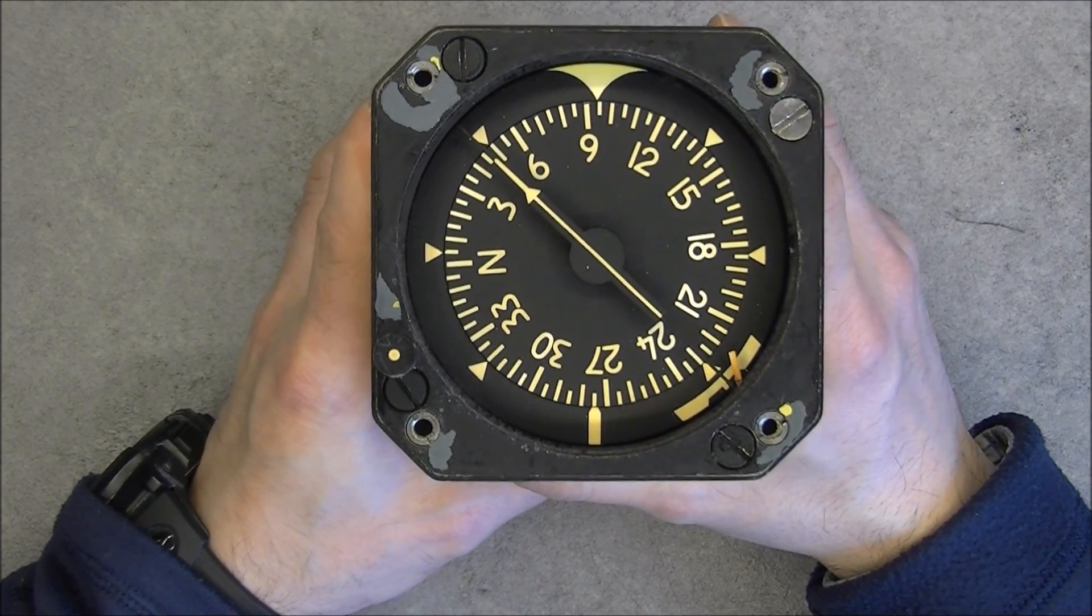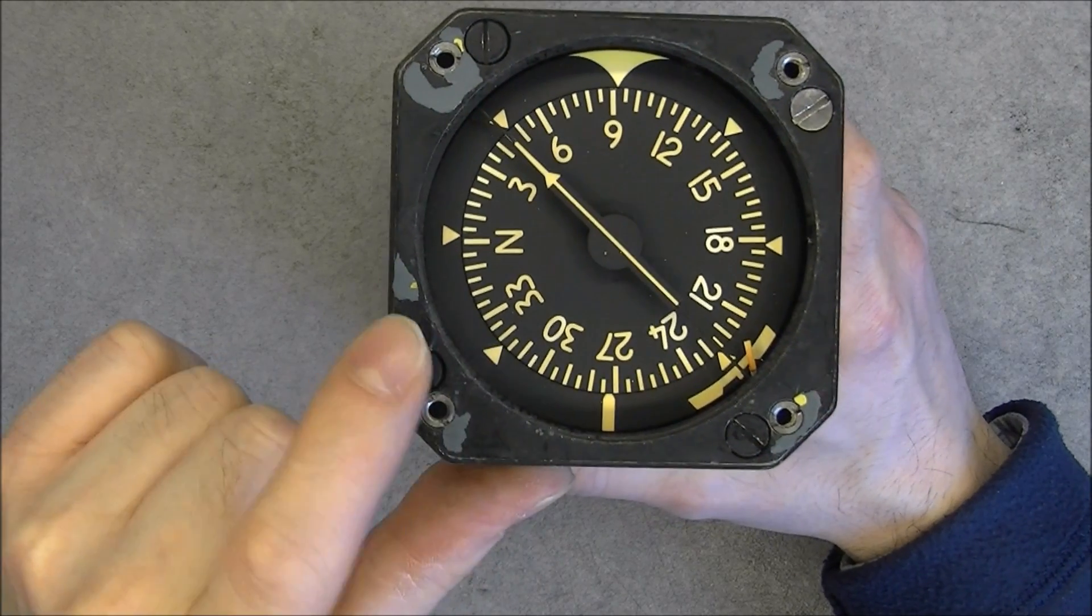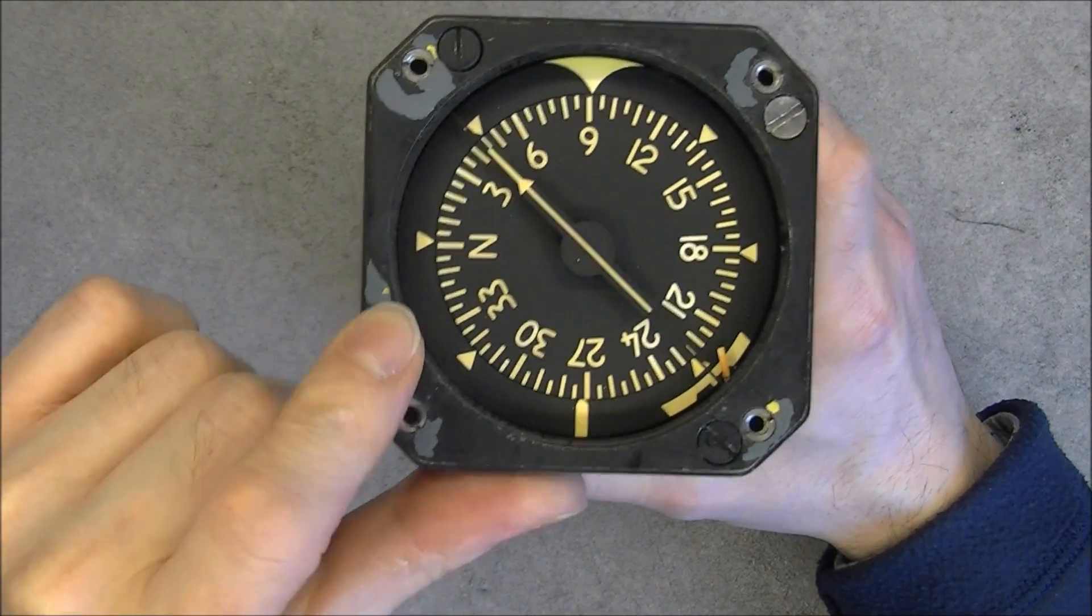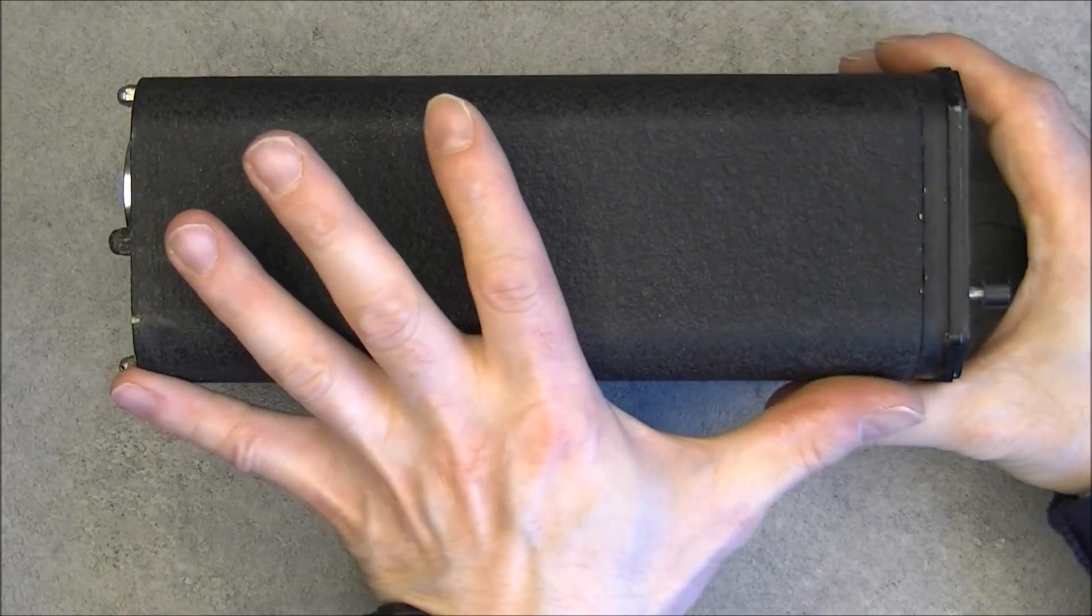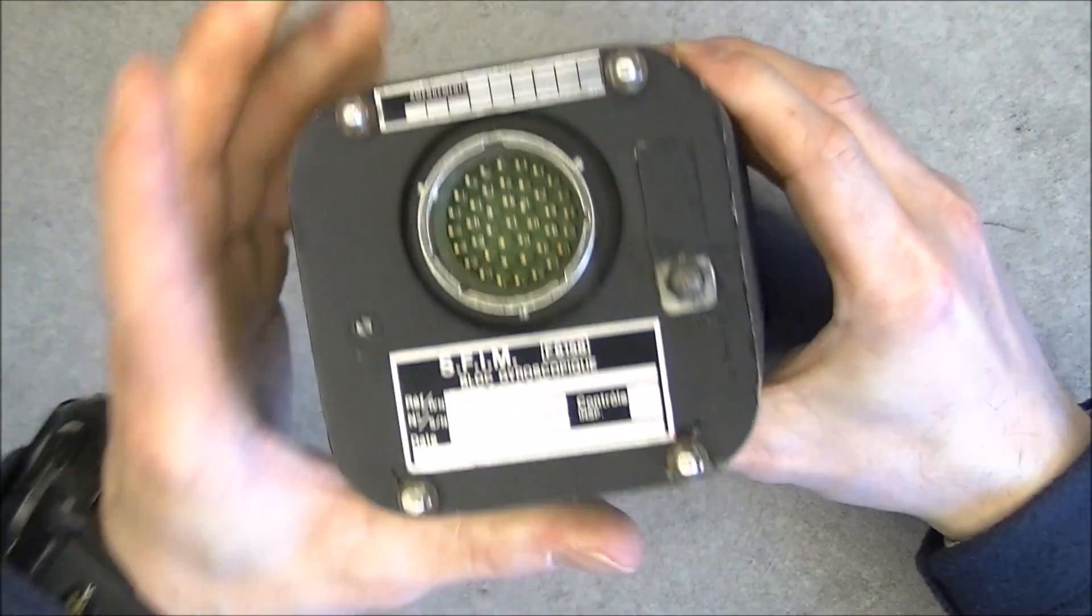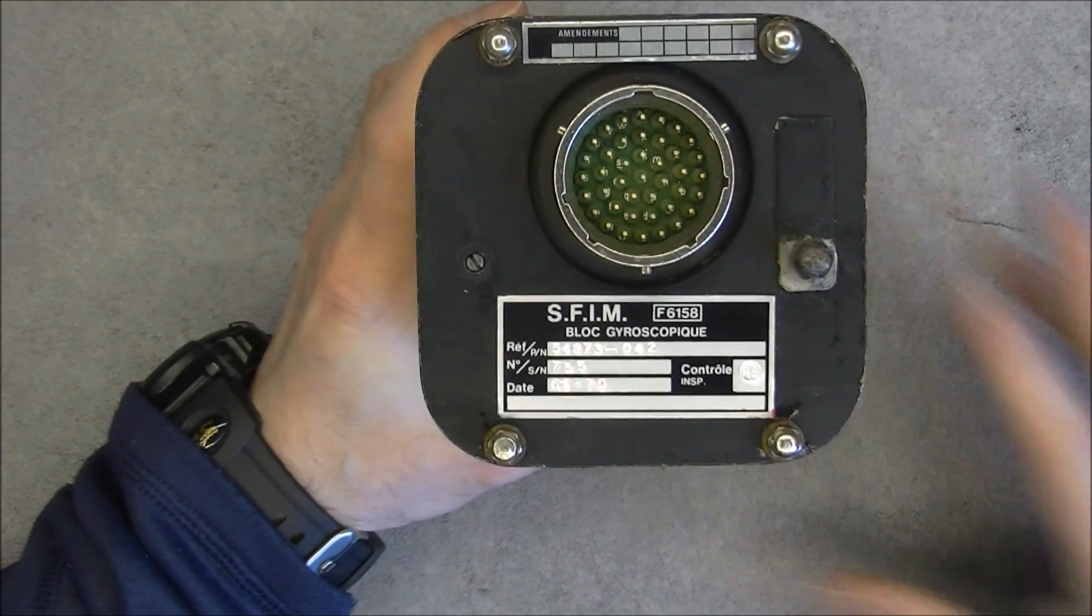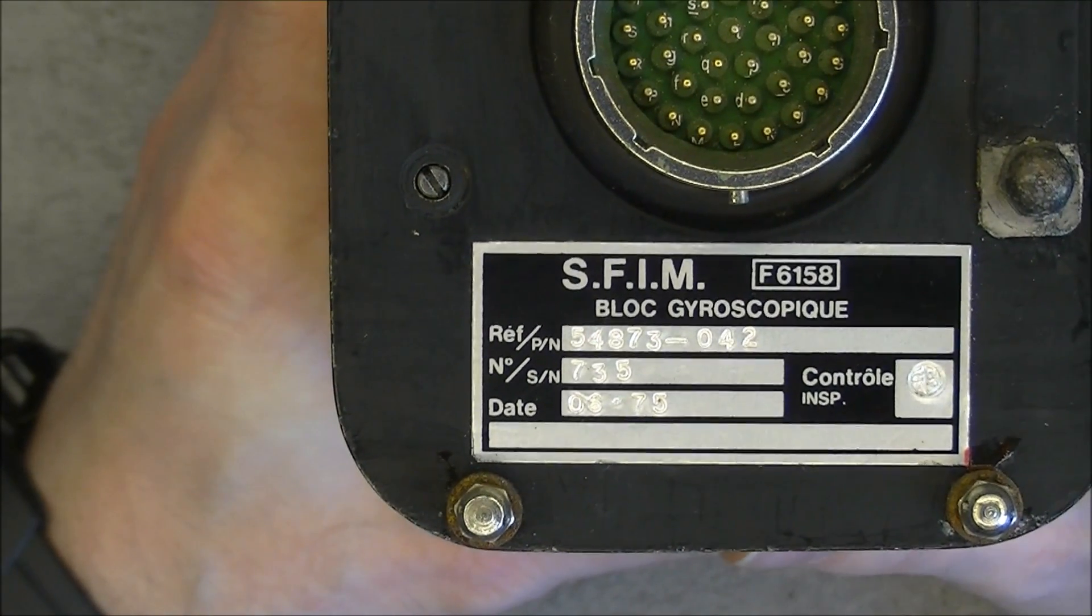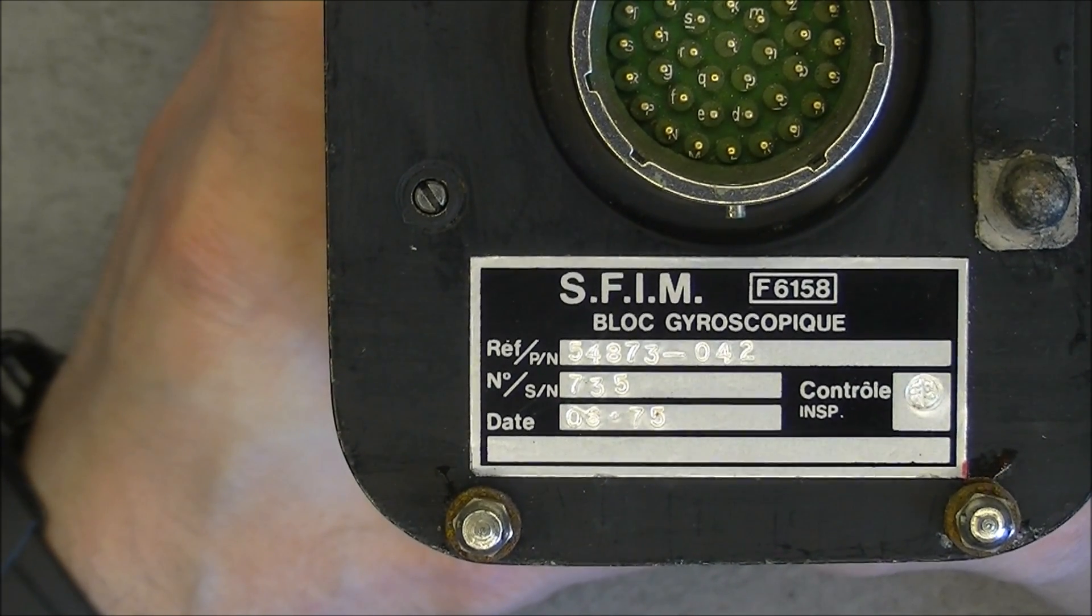As you can see in the front just an indicator, needle and disc rotating with the compass directions. Little moving flag here and some kind of a press button here. The case is barely 20 centimeters long in hammered black metal paint. And here is the information for people playing at home. So it is made by the French SFIM company and it is called gyroscopic block. So we can expect a gyroscope inside this.